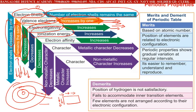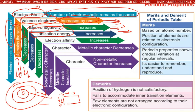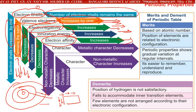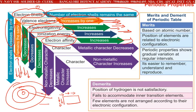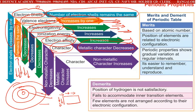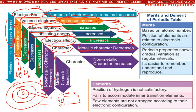Ionization energy increases towards the right and decreases going down. Electron affinity increases towards the right and decreases going down. The metallic character decreases as you go towards the right, and the non-metallic character decreases when you go down the group.